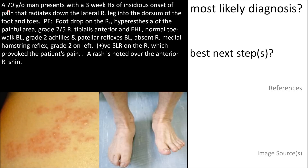The fourth case is a 70-year-old man with a three-week history of insidious onset pain radiating down the right lateral leg into the dorsum of the foot and toes. On physical exam, there's a foot drop on the right side. A rash is noted over the anterior right shin.